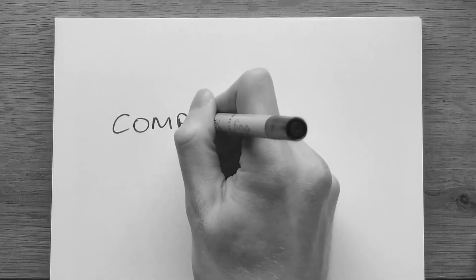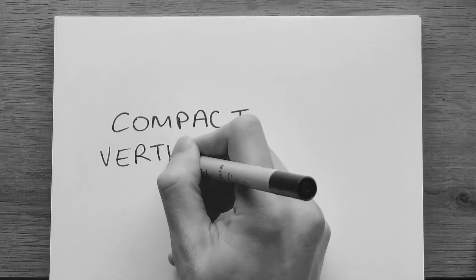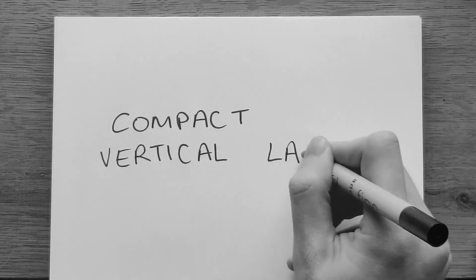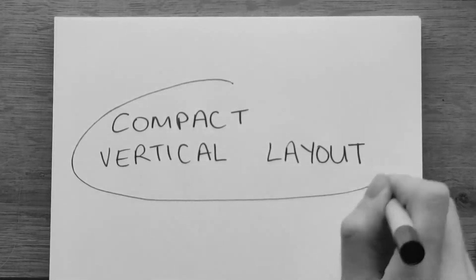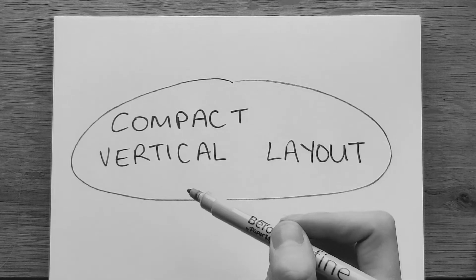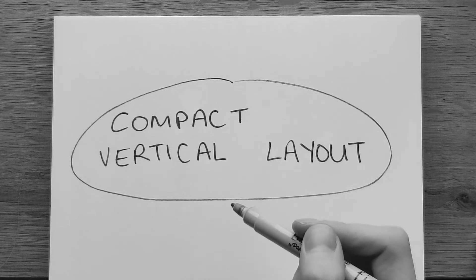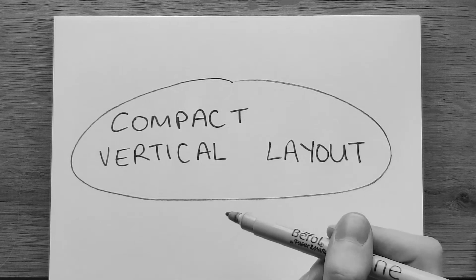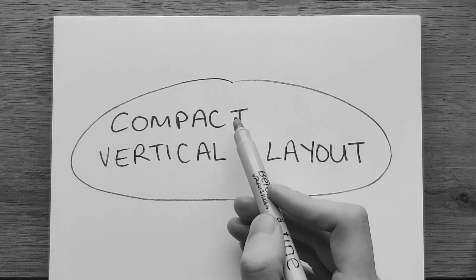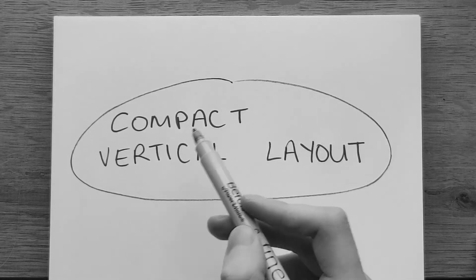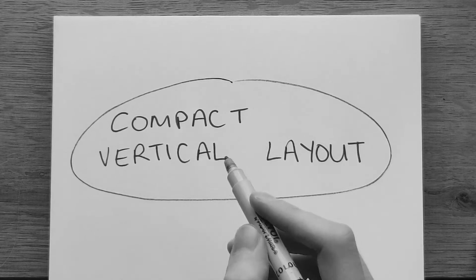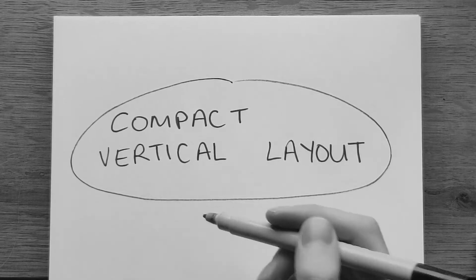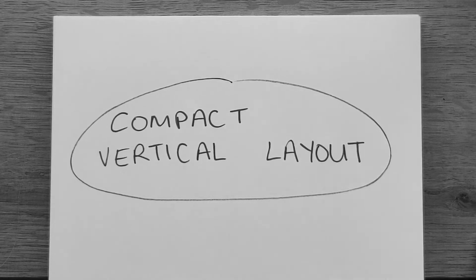Today we're going to be learning about compact vertical layout. This is a kind of division and it'll lead on to something called long division or the bus stop method, which you may have heard of before. It uses the same method we've talked about — using multiplication to solve division questions — but it's compact, meaning it doesn't use up more space or equations than we need. Vertical means it goes up and down rather than side to side.